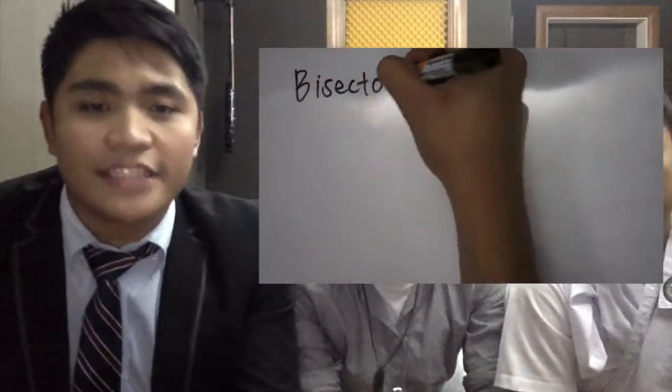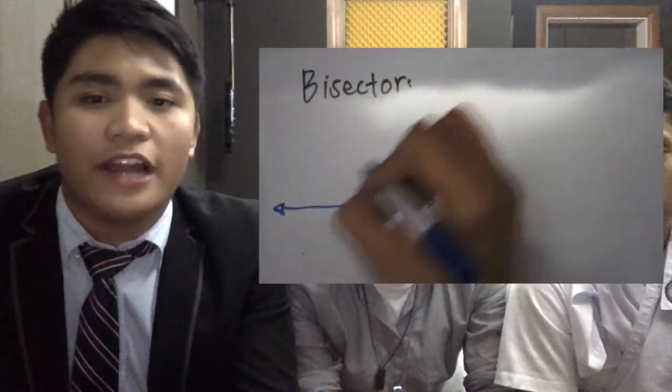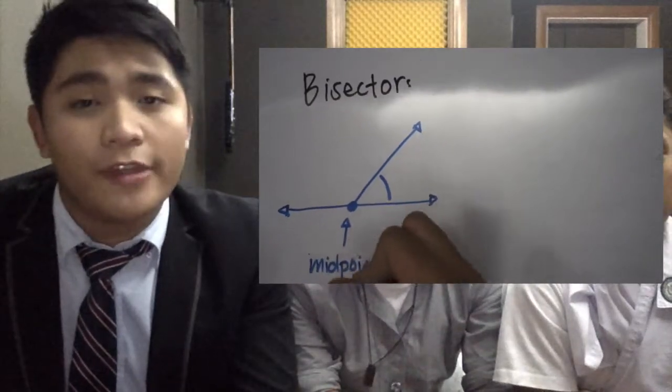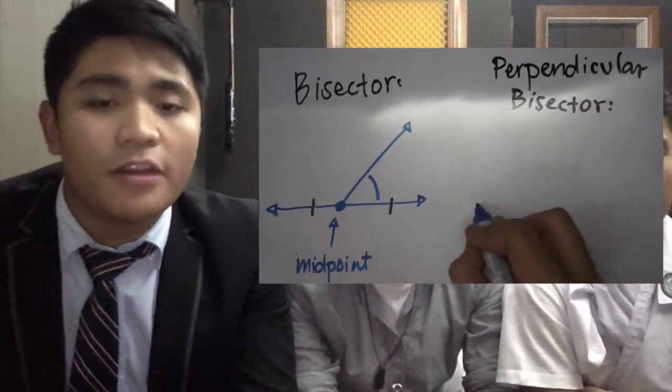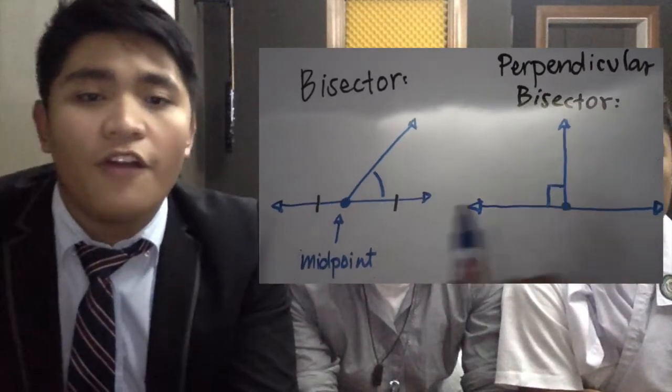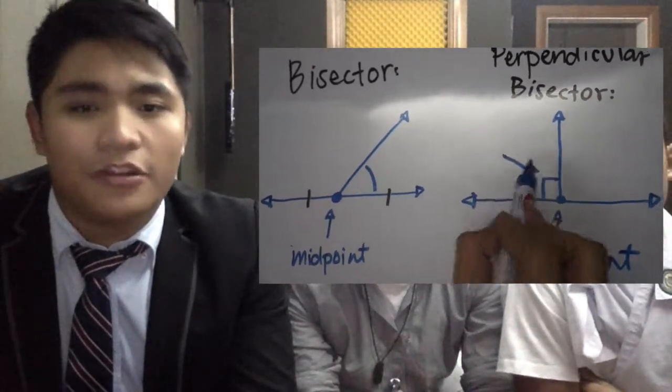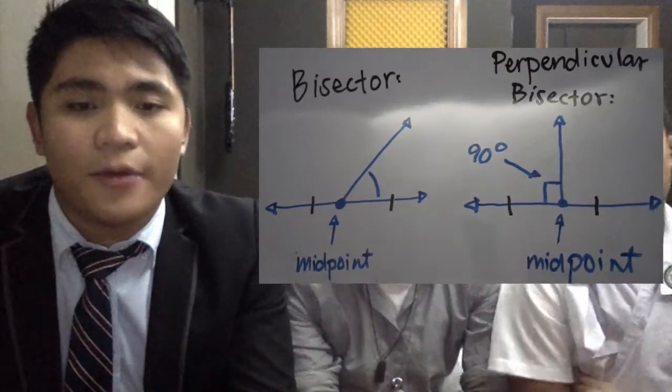Hey Matt, what is the difference between a bisector and a perpendicular bisector? Well Sean, a bisector is a line segment or ray that intersects another line at its midpoint, or a point that divides the line into two equal parts. A perpendicular bisector, on the other hand, fulfills the conditions of a bisector but must intersect the midpoint at a 90 degree angle only. So now that we've defined and understood what we're trying to prove, let's go back to the statement and prove it step by step.